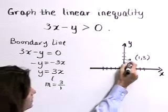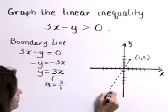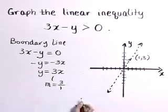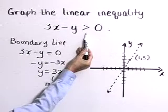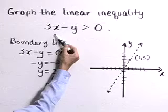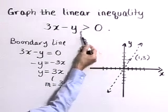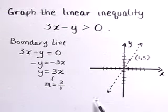Now as we graph it, we'll graph this boundary line as a dotted line because this is a strict inequality. We want to include points that satisfy 3x minus y is greater than zero. There's no equal to part here. Thus we draw a dotted line.